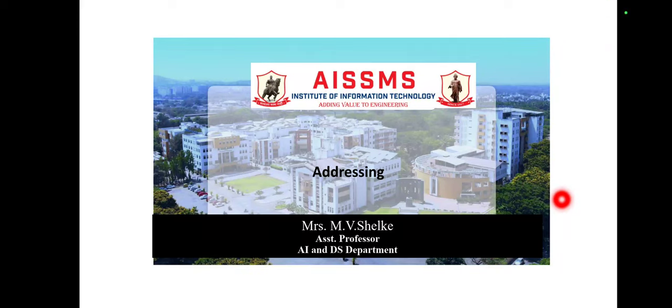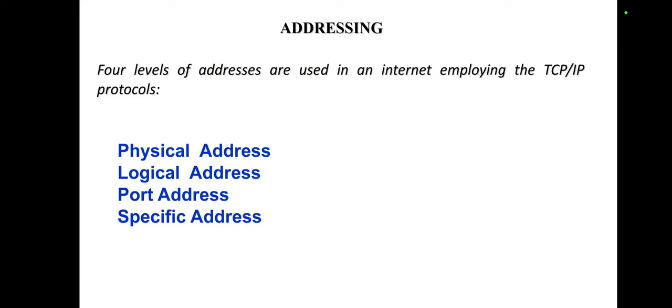Hello, I am Mayura Shayke. Today I am going to explain the concept from the subject Computer Networks, specifically addressing. In addressing, there are four levels of addresses used in the internet: the first is the physical address, second is the logical address, third is the port address, and the fourth is the specific address. We will see each address in detail.